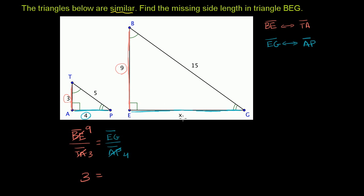Well, EG, let's just call that x. Since they call it x, this is going to be equal to x over 4. EG is x, AP is 4.